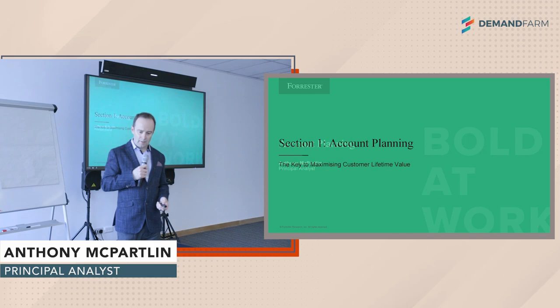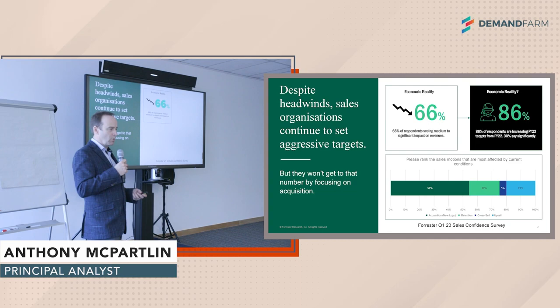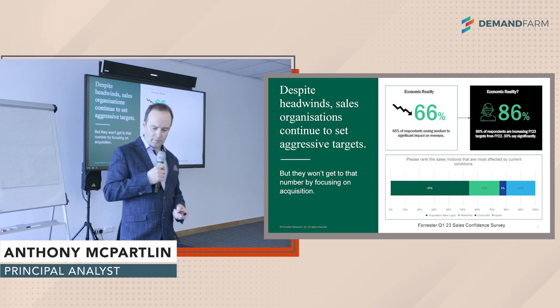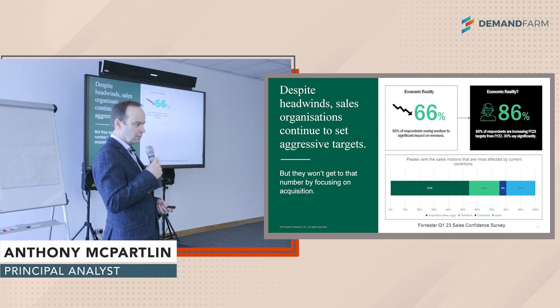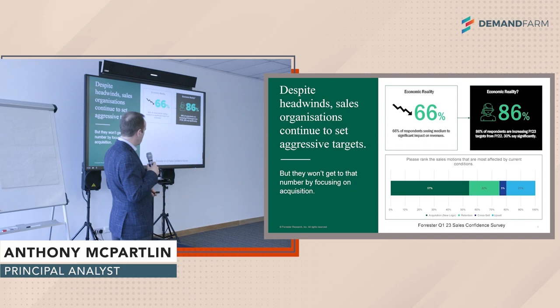I want to share a little bit of data I just collected in Q1. What we really wanted to find out was how B2B sales organizations were faring in the current environment, what was going on, and how it was impacting their ambitions for the year ahead. What we found was 66% of the organizations we surveyed were seeing medium to significant impact on revenue. What was surprising is how that was impacting their goal setting and target setting — 66% are seeing medium to significant impact, but 86% were increasing their targets anyway, and 30% significantly.